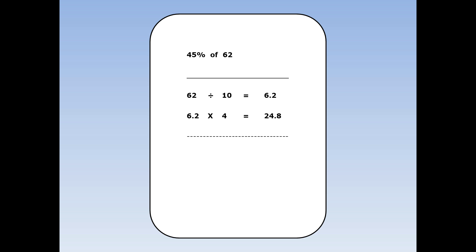Next, we find 5%. That's 10% divided by 2. 10% is 6.2. 6.2 divided by 2 is 3.1. And finally, we add 40% and 5% together. 40% is 24.8 and 5% is 3.1. 24.8 plus 3.1 is 27.9.